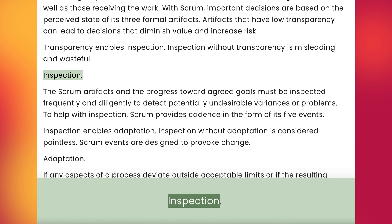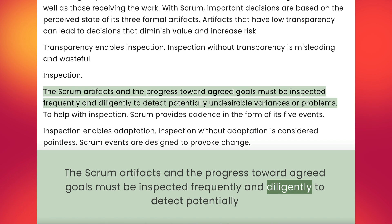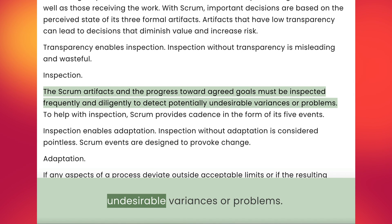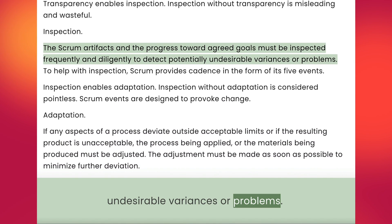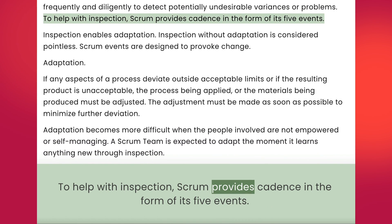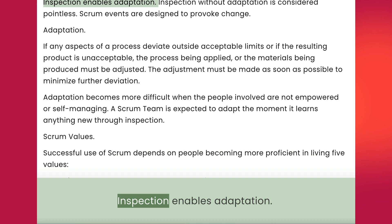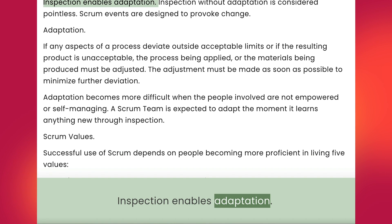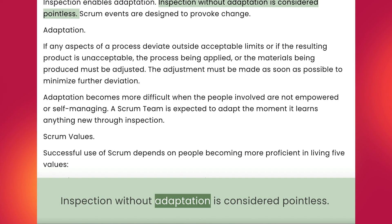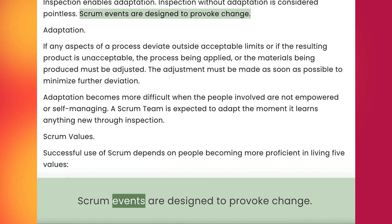Inspection. The Scrum artifacts and the progress toward agreed goals must be inspected frequently and diligently to detect potentially undesirable variances or problems. To help with inspection, Scrum provides cadence in the form of its five events. Inspection enables adaptation. Inspection without adaptation is considered pointless. Scrum events are designed to provoke change.